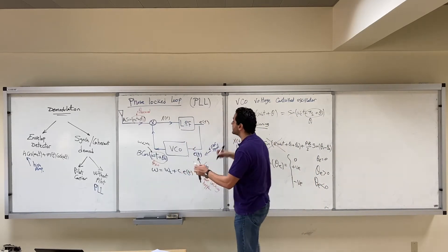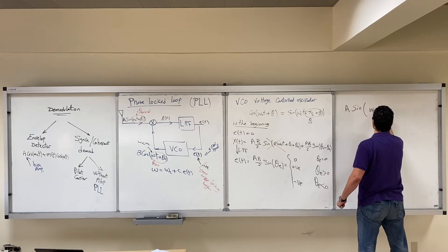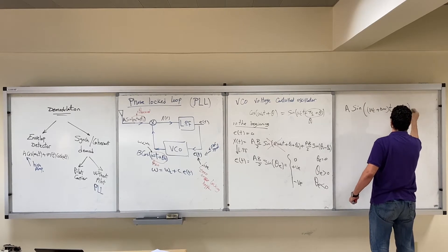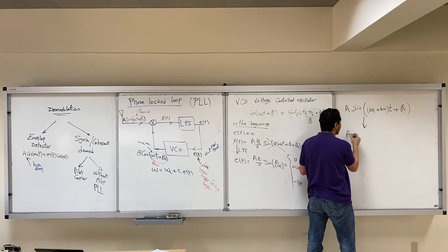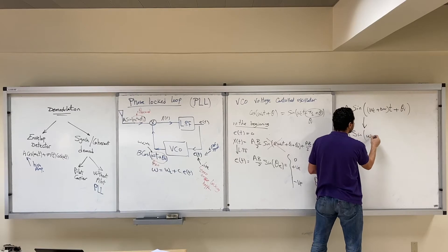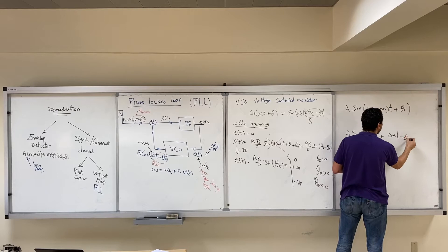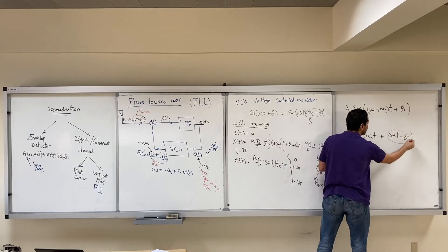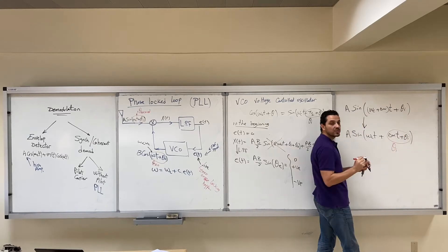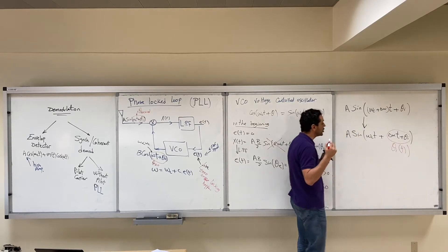If the frequency changes in the received signal, it will become (omega_c + delta_omega)·t plus some theta_i. Then you can write this signal as A·sin(omega_c·t + theta_i(t)), where this part is not a fixed theta_i but rather theta_i(t) — a phase that is changing with time.